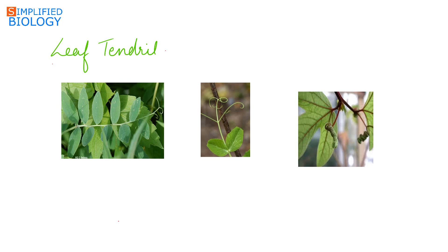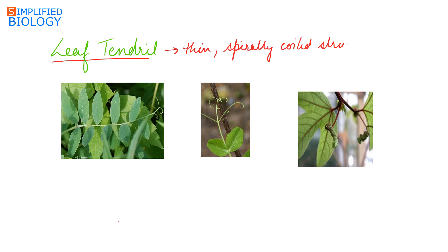Leaves get modified to perform various functions besides photosynthesis. First, leaf tendril. In this, the leaf gets modified into a thin, spirally coiled structure that coils around the support, helping the plant to climb. Either the complete leaf is modified into a tendril, as seen in this figure.